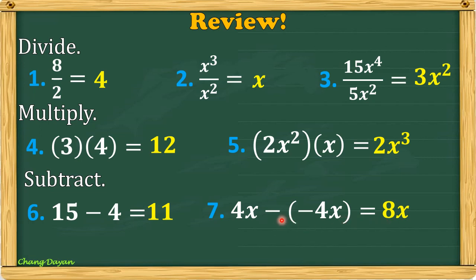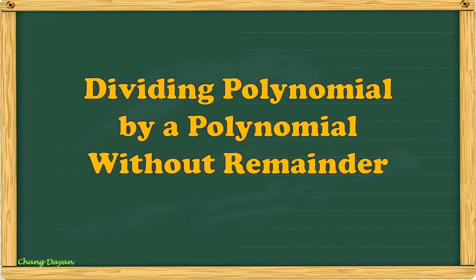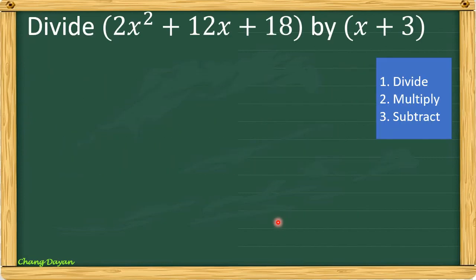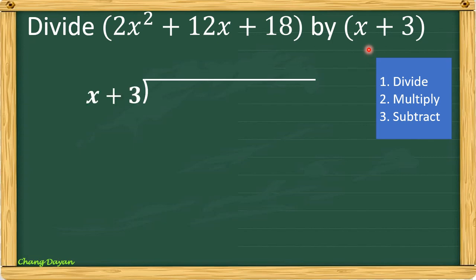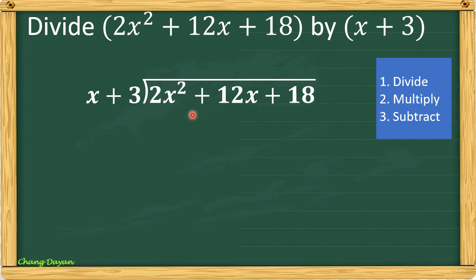Remember, you will change the sign and then proceed to addition. Now let us divide a polynomial by a polynomial without remainder. Given here is 2x squared plus 12x plus 18 divided by x plus 3. Don't forget our three steps: divide, multiply, and subtract. x plus 3 will be our divisor and 2x squared plus 12x plus 18 is our dividend. Be sure that the dividend is arranged in standard form.